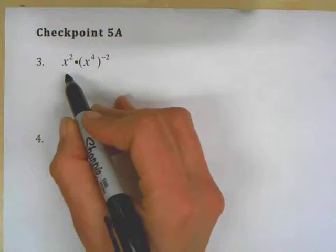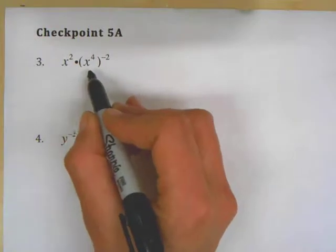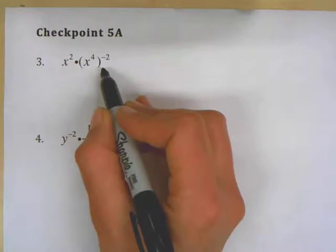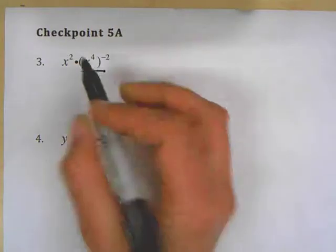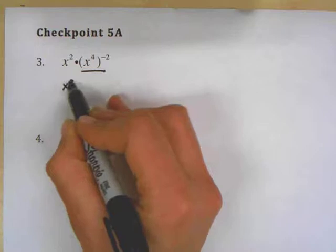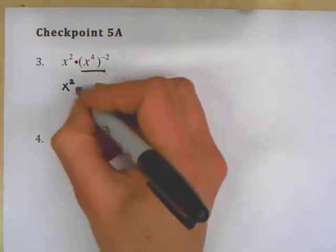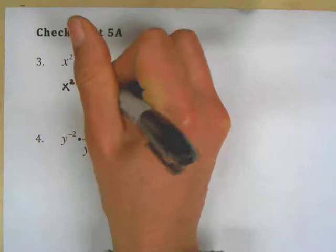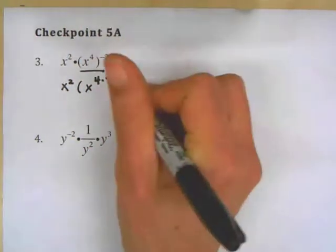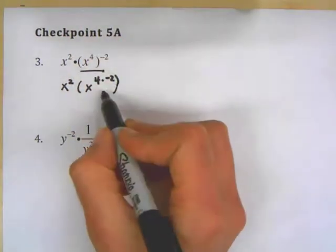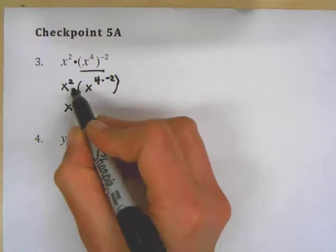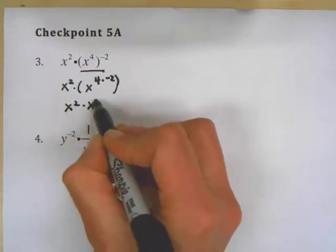So looking at this problem here, I can see I have x squared times x to the fourth, raised to the negative second power. When you're doing this, you need to get rid of the parentheses first. This is a power to a power, and so when you have a power to a power, you're going to take your exponents and multiply them — so 4 times negative 2. This gives x squared times x to the negative 8.